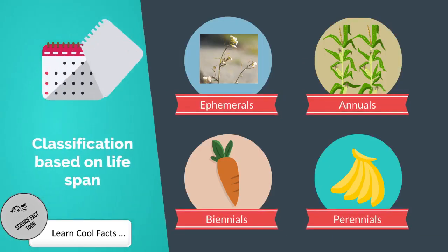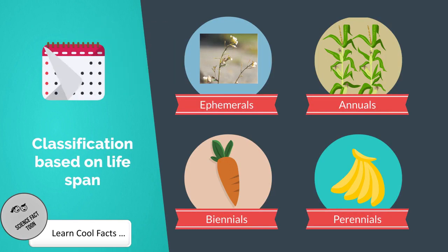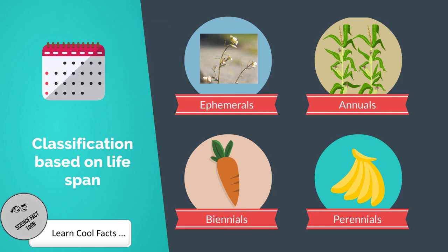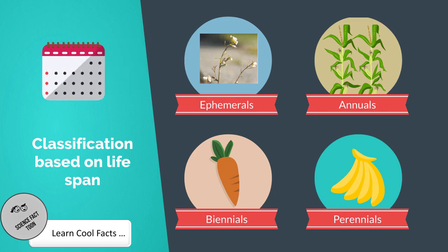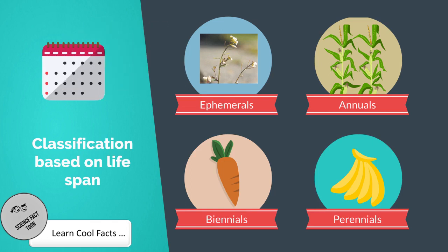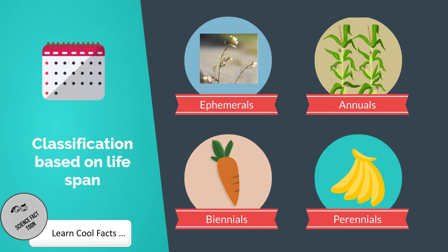Classification based on lifespan. 1. Ephemerals: These are the plants that complete their life cycle within the span of a few weeks. Example: Arabidopsis. 2. Annuals: These are the plants that complete their life cycle within the span of one year. They germinate, grow, and reproduce by bearing fruits and flowers within a year. Examples: corn, watermelon, grass.